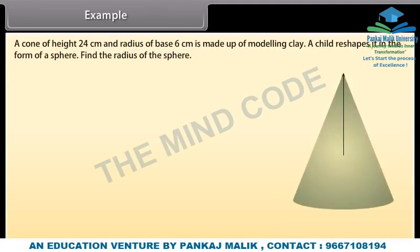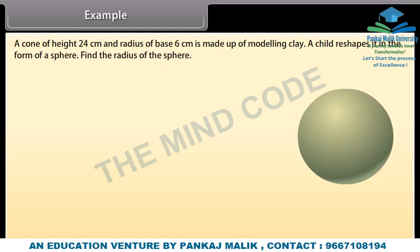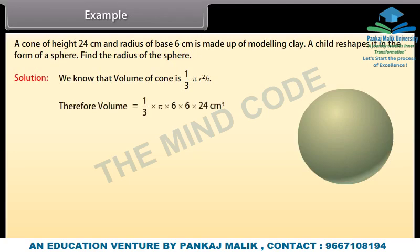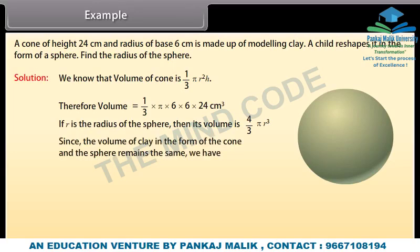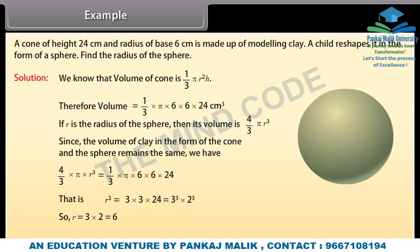Example: A cone of height 24 cm and radius of base 6 cm is made up of modeling clay. A child reshapes it in the form of a sphere. Find the radius of the sphere. Solution: Volume of cone = (1/3)πr²h = (1/3) × π × 6 × 6 × 24 cm³. If r is the radius of the sphere, its volume = (4/3)πr³. Since the volume is preserved, r = 3 × 2 = 6. Therefore, the radius of the sphere is 6 cm.